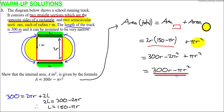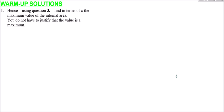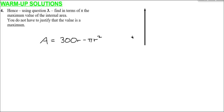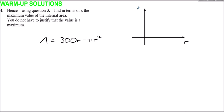Question 4 uses the result from question 3. Using that expression, we need to find, in terms of π, the maximum value of the internal area. We do not need to justify that it is a maximum. From question 3, the area is A = 300r − πr². This will be a maximum when dA/dr = 0.